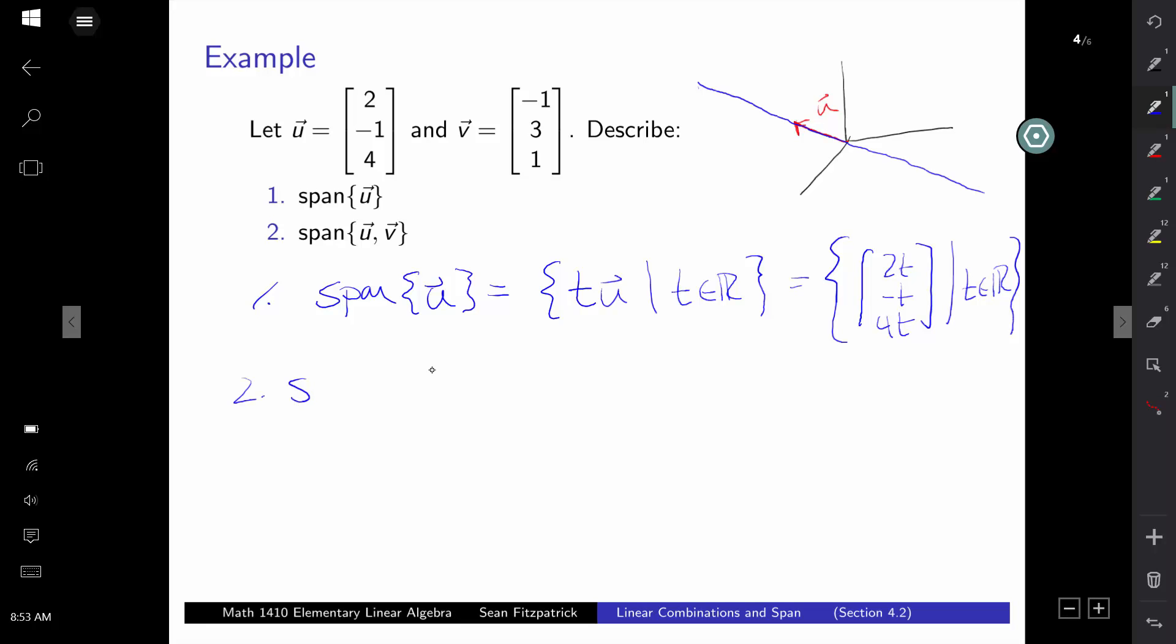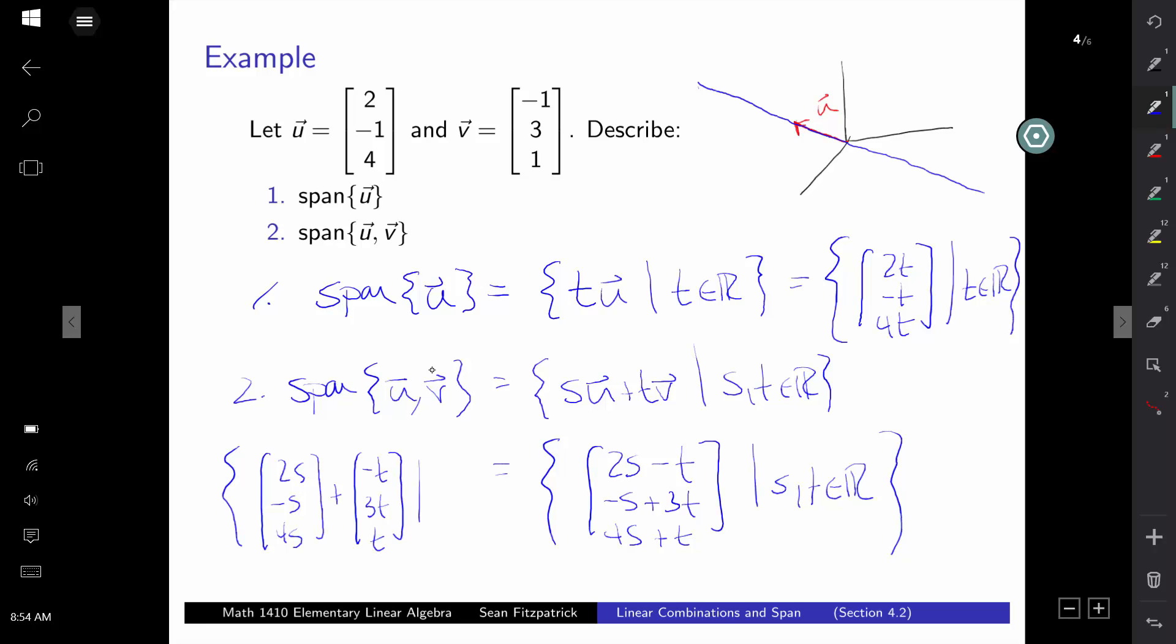For the span of U and V, then we're looking at all things that look like s times U plus t times V, where s and t are real numbers. So this time we get things that look like (2s - t, -s + 3t, 4s + t), where s and t are real numbers. So what I've done there, let me fill in one more step. S times U, if I take the vector U and multiply by the scalar s, I have (2s, -s, 4s). If I do t times V, I have (-t, 3t, t). So s and t here are real numbers.